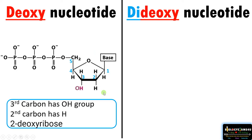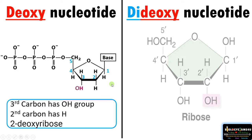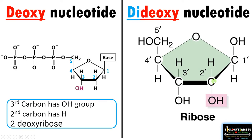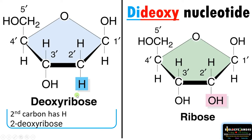Let us focus on the sugar molecule to understand better. In ribose, the second carbon position has a hydroxyl group and the third carbon position also has a hydroxyl group. Whereas in deoxyribose, the second carbon position has only hydrogen without an oxygen, while the third carbon position retains a hydroxyl group just like ribose. Therefore it is called 2-deoxyribose.